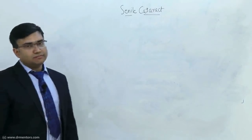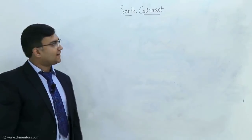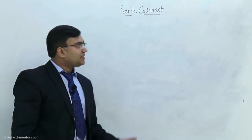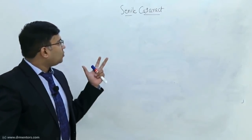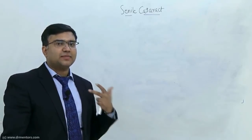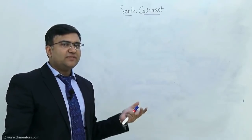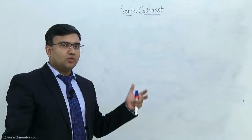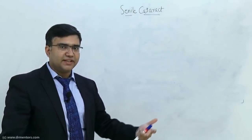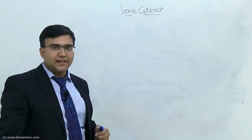Now we come to the main topic, the senile cataract. Senile cataract means with age we lose the transparency of our lens. If this loss of transparency comes with age, it is called a senile cataract.